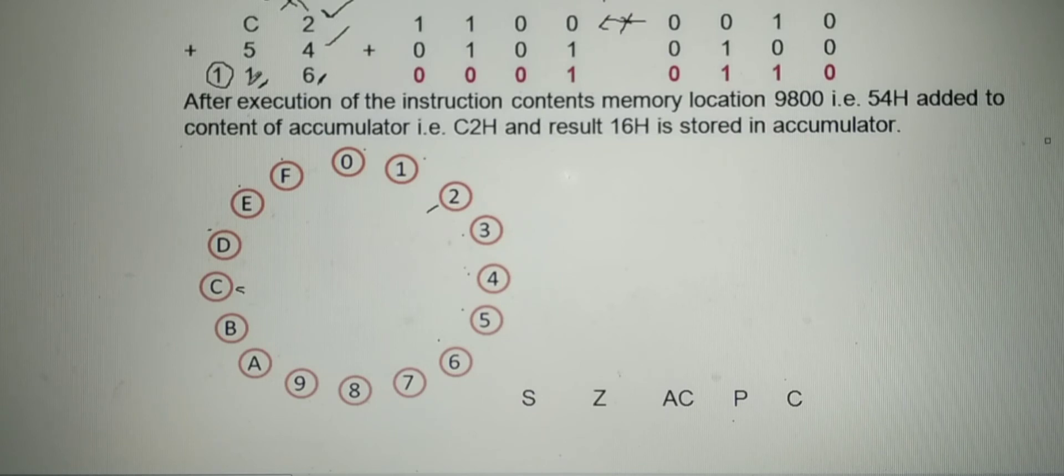The accumulator can accommodate only 2 hexadecimal digits. Therefore, after execution of the instruction, the contents of accumulator becomes 16H. This is in hexadecimal form. To find out the answer in binary form, for each digit, write its equivalent using 4 bits.